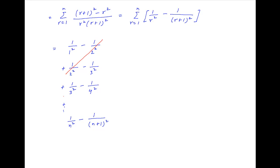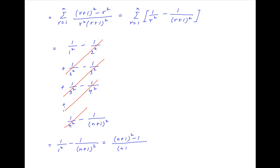Notice that alternate terms cancel, and we are left with only two terms. Therefore, Sn = 1 minus 1/(n + 1)², which equals [(n + 1)² − 1] / (n + 1)², and this simplifies to n(n + 2) / (n + 1)², which is the required answer.